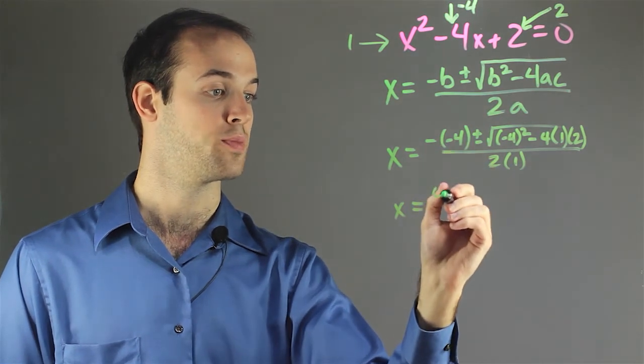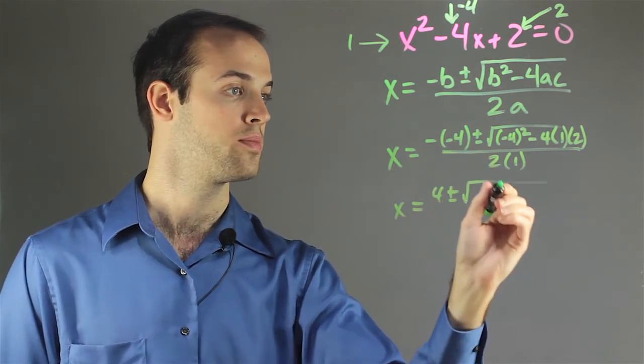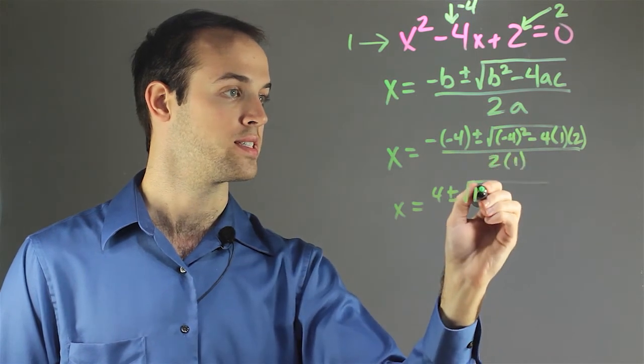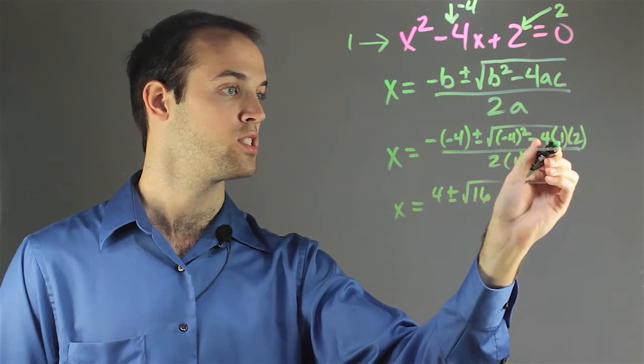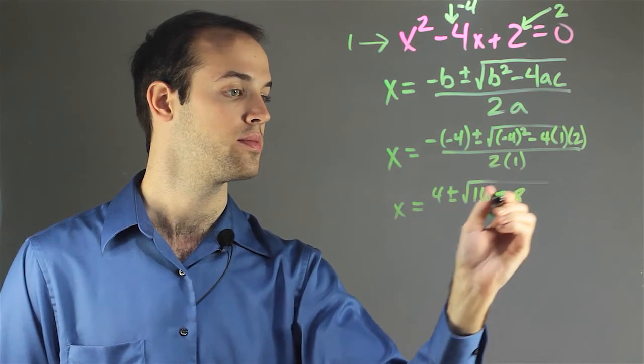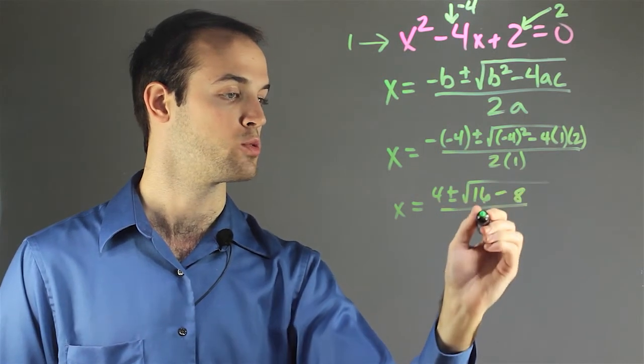Negative negative 4 is positive 4, plus or minus negative 4 squared is 16, minus 4 times 1 times 2, which is 8, all over 2 times 1, which is 2.